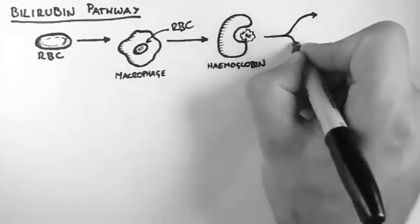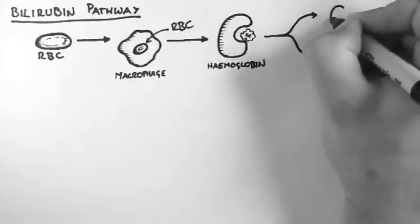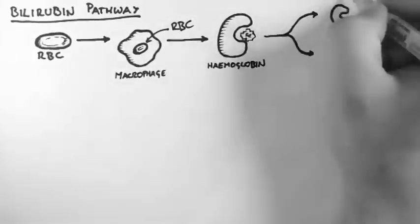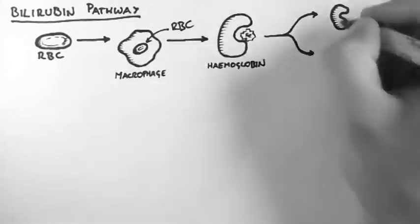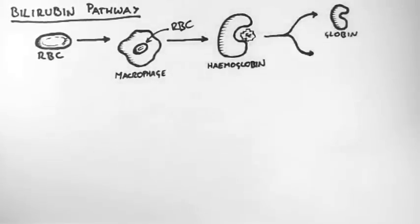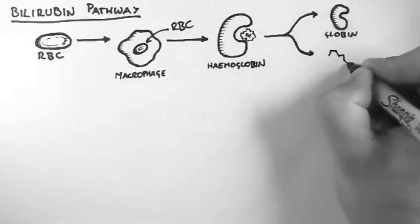The globin and the heme dissociate. So this is the globin part and the protein gets broken down and recycled. And this is the heme part.